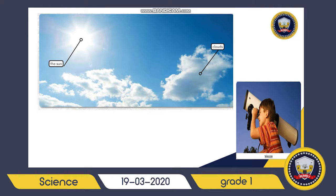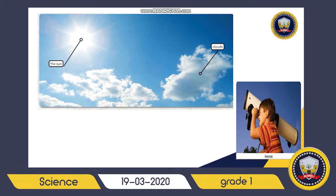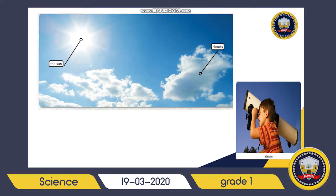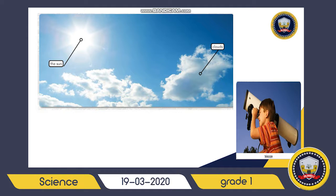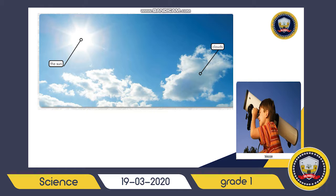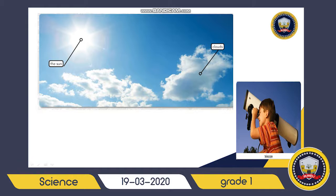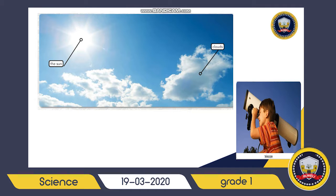Did you know that our Sun is actually a star? Yes, it is a star that is closest to Earth — that's why it looks so bright. The Sun is a bright star you can see in the daytime, and you can see in this picture the Sun as a bright star in the sky.